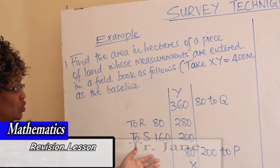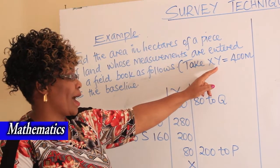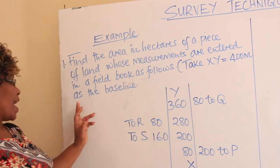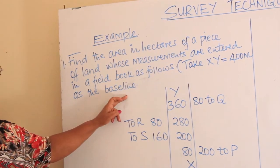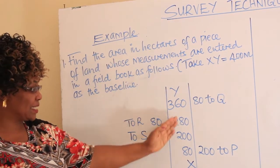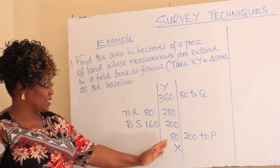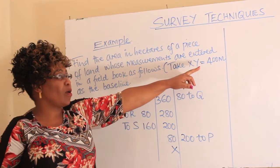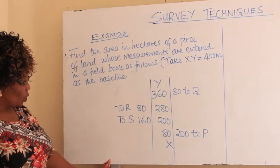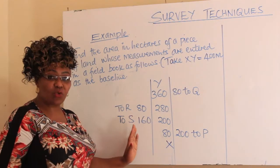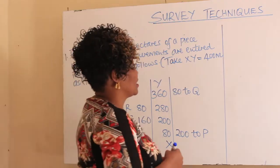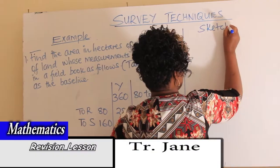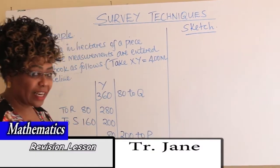These are the measurements. You are told XY is equal to 400 meters as the baseline. So our baseline starts from X all the way to Y, but Y should be at 400 meters. What do you do? You first draw what we call a sketch of the piece of land.